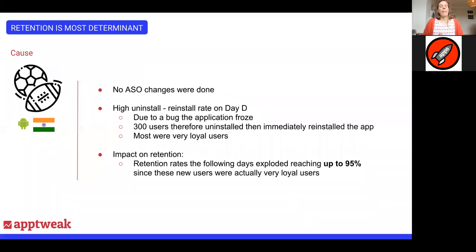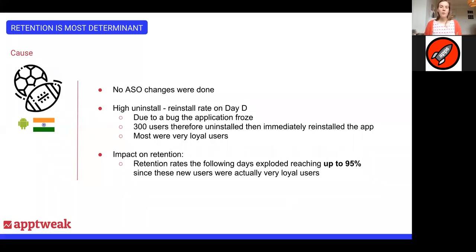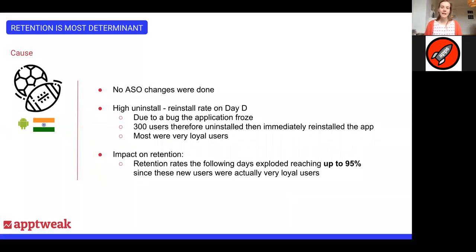Then they realized that a few days before they noticed this spike, a big bug had taken place in the app — the app would freeze, and the only way to get it working again was to uninstall and reinstall. They fixed the bug as quickly as possible, but that day, 300 users uninstalled the app and then reinstalled it to get it working again. These were of course very sticky, loyal users who were actively using the app. I'm going to name the day that bug happened 'Day D'.